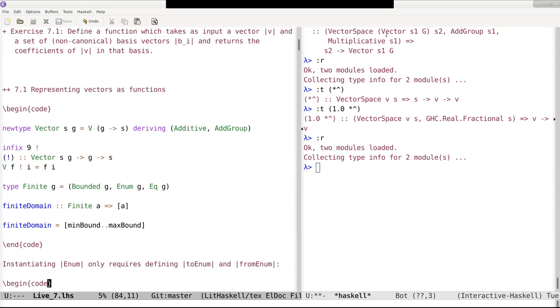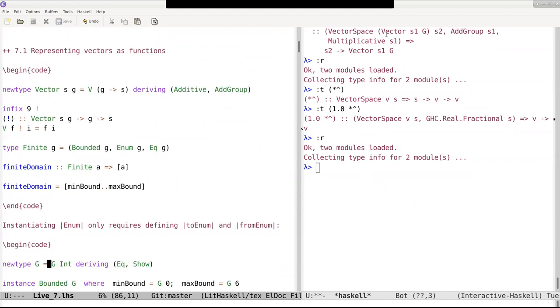We can go back to the Haskell implementation to see that a little bit better. Here is the declaration of the new type. And here we have this infix bang operator that perhaps you know from LISPs or from other data structures that just unwraps the vector and applies the function that actually constitutes the vector to a given component to obtain a scalar.